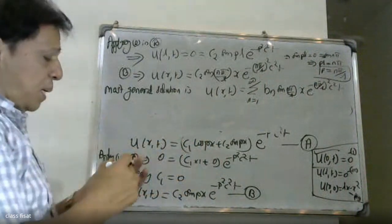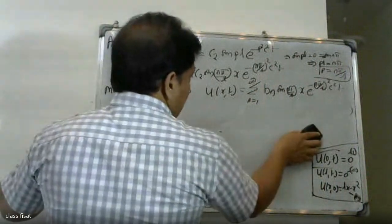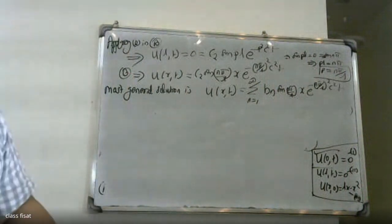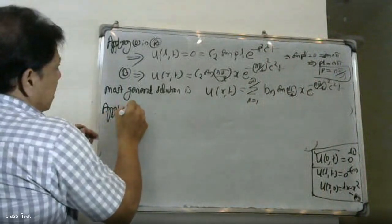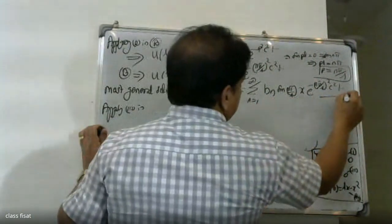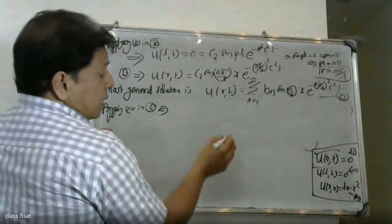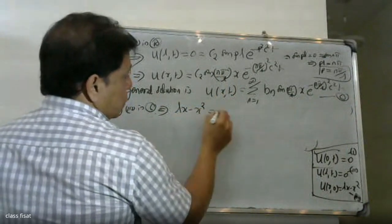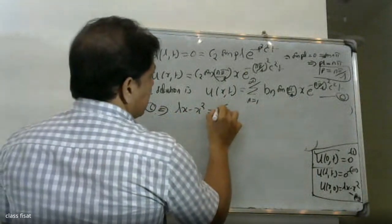Now applying the last condition: u(x,0) = Lx − x². We substitute t=0 into the general solution to find the coefficients Bn.